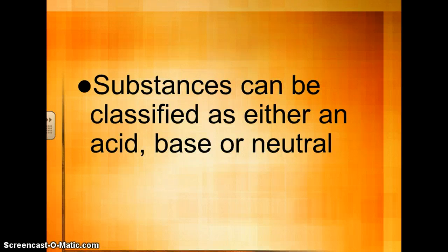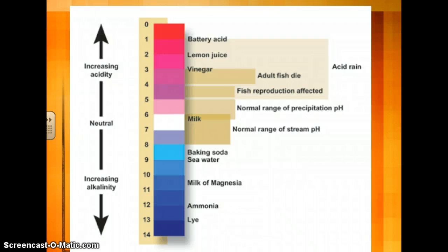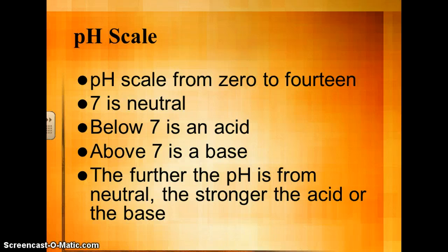Substances can be classified as either being an acid, a base, or they can be neutral. Here's an example of what the pH scale looks like, where your battery acid would be located, milk, lye, things like that. The pH scale is a scale that ranges from 0 to 14. 7 is considered neutral. Anything below 7 is an acid, and anything above 7 is a base.